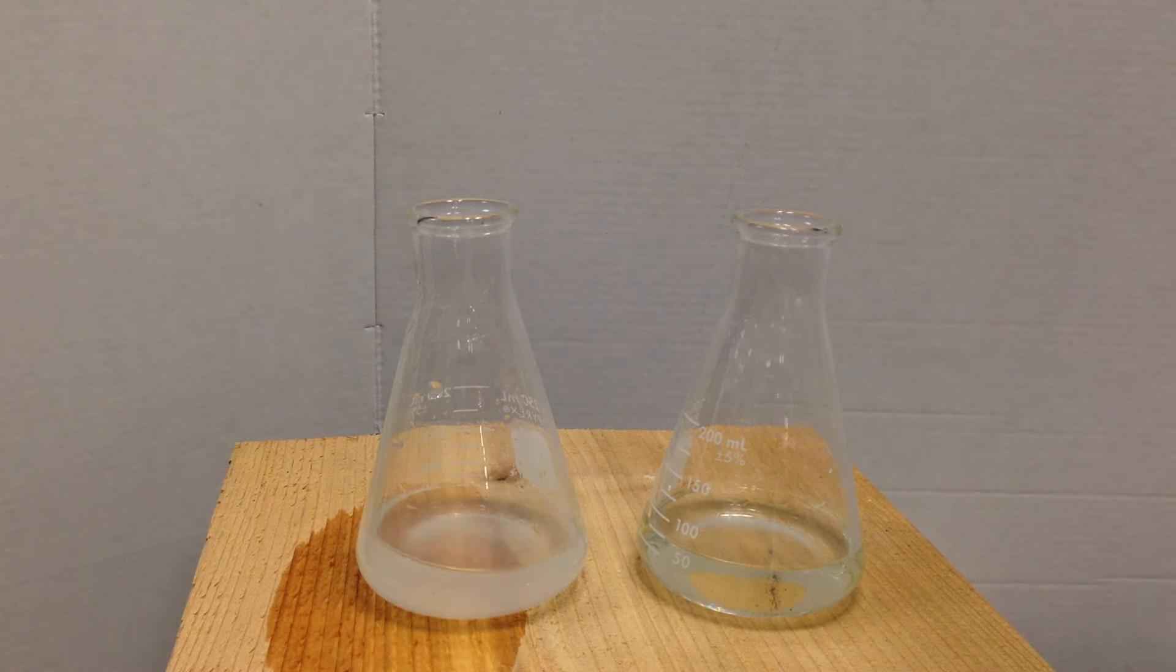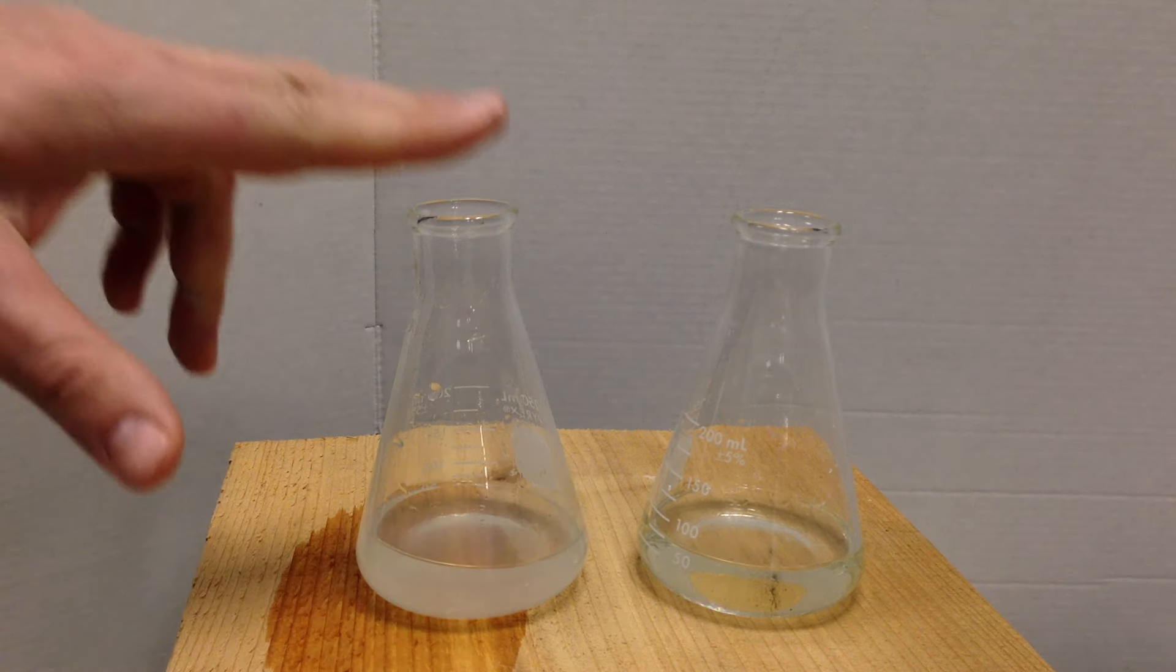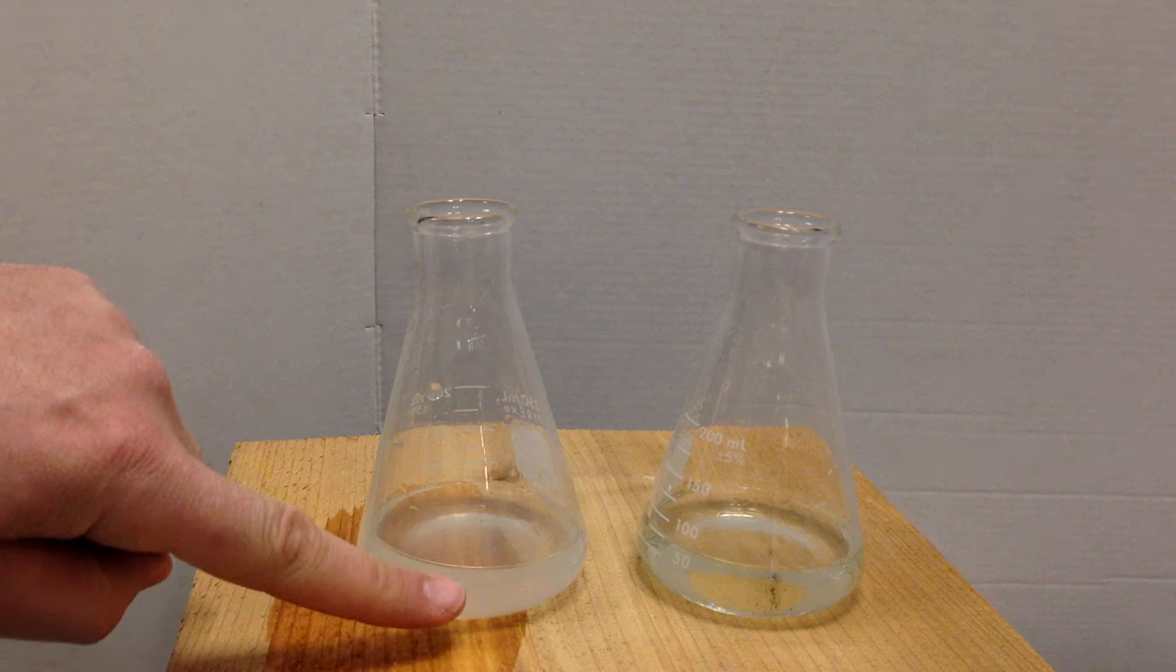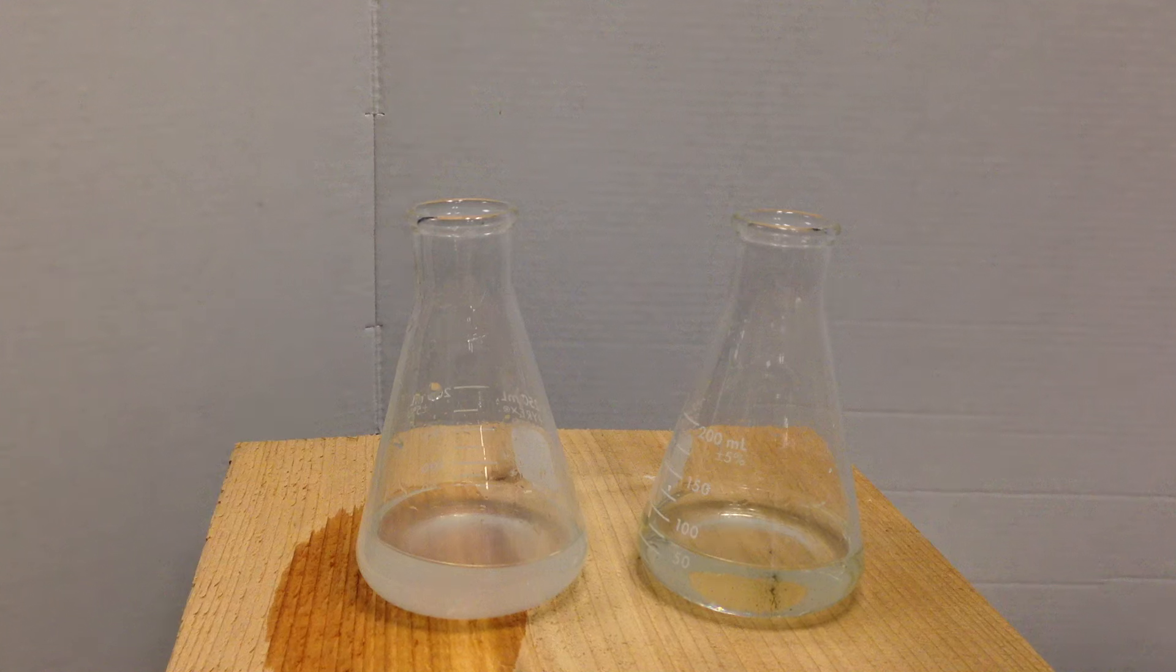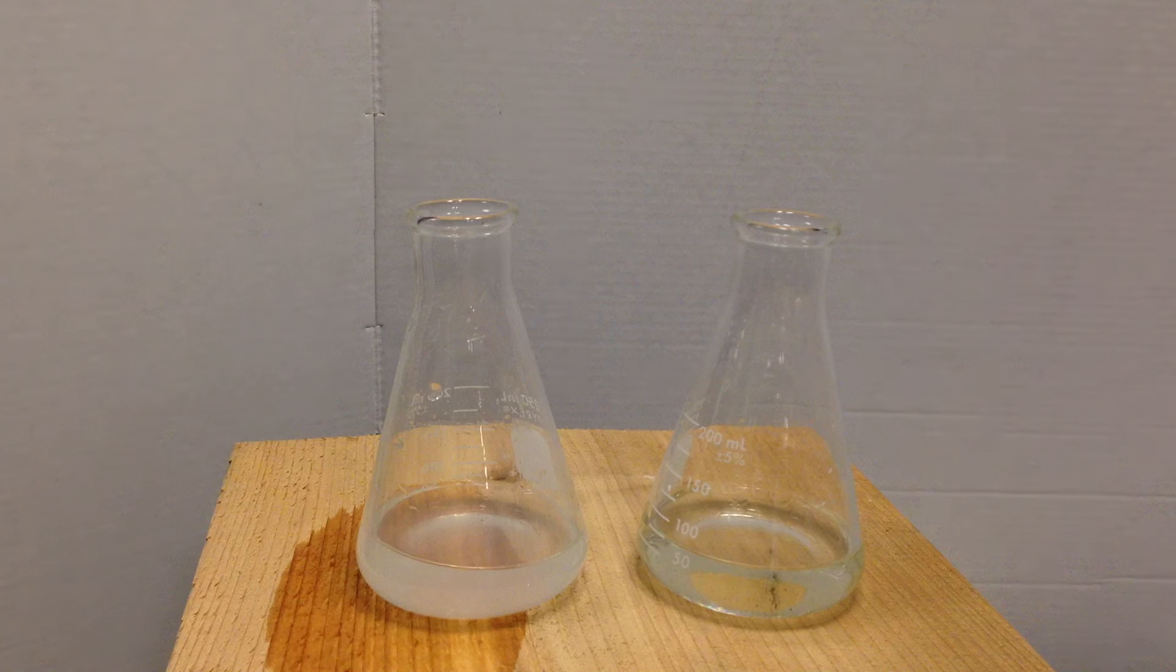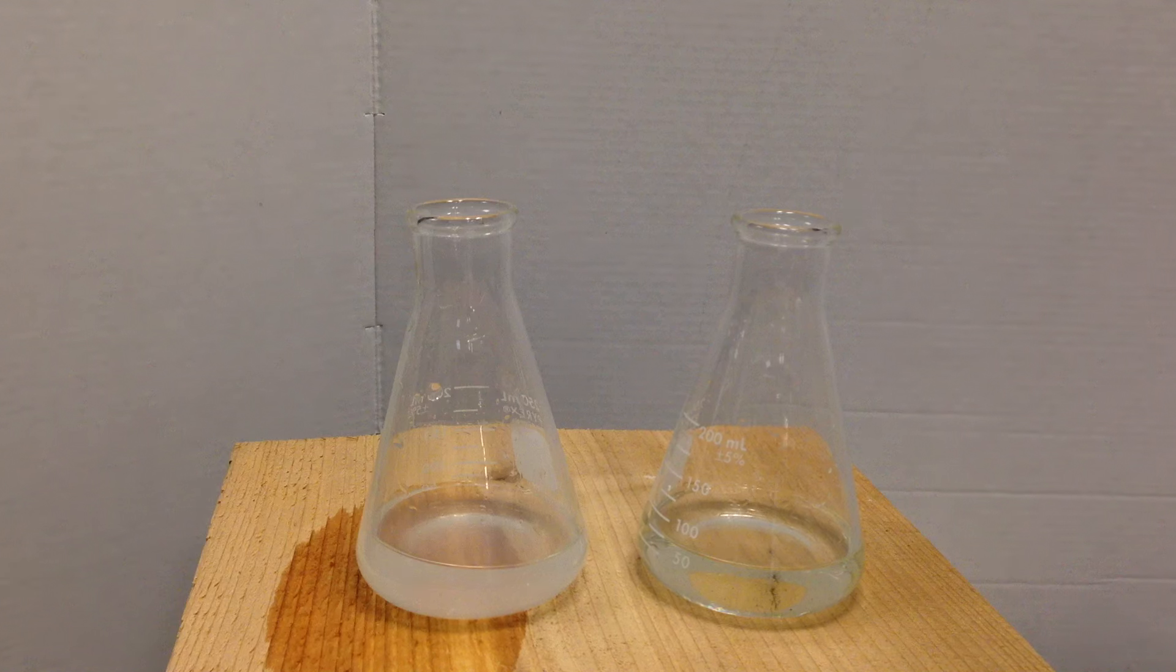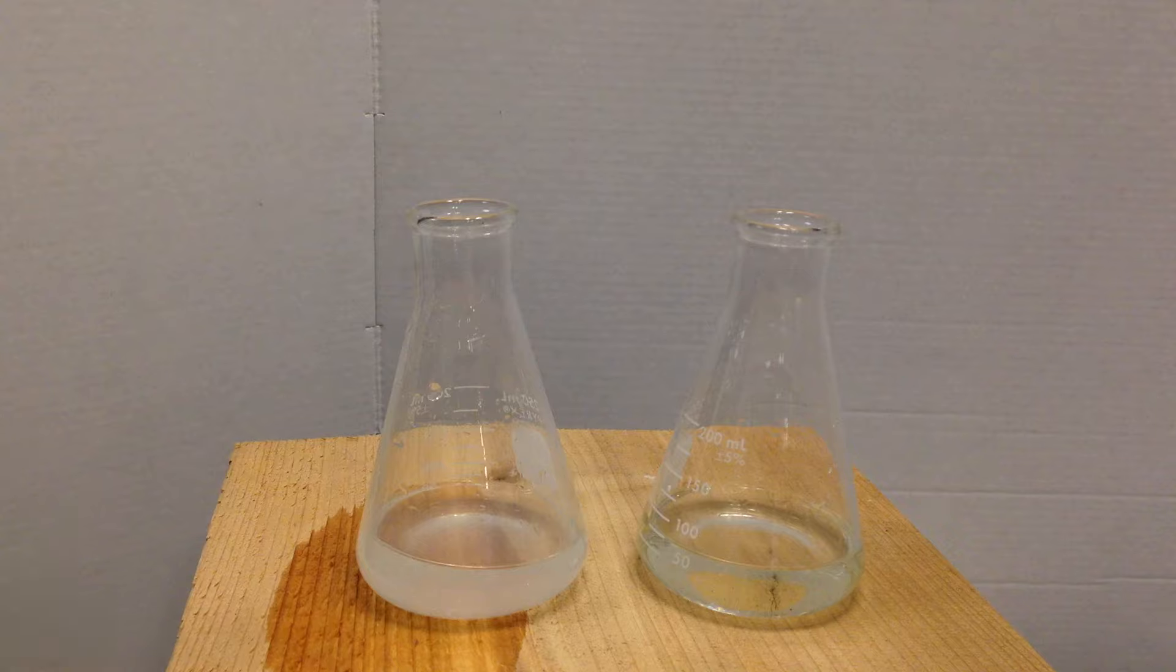So I'm going to pour these together and take two aqueous solutions and see if a precipitate results. Now precipitate is when a solid comes out of the solution because we're going to do a double replacement or something called a metathesis reaction. Lead plus two from this beaker is going to attract and hook up with the iodine ion to make PbI2 or lead iodide and that is going to create a precipitate because the lead iodide prefers itself more or attracts itself more than water. So let's do that.